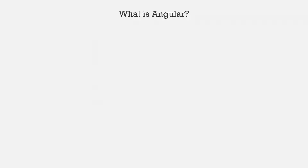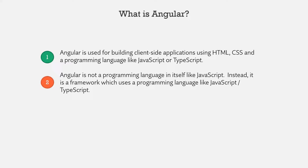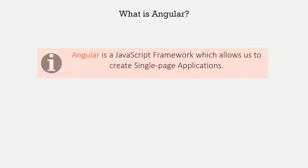So what is Angular? Angular is used for building client applications using HTML, CSS and a programming language like JavaScript or TypeScript. Remember that Angular is not a programming language in itself like JavaScript — instead, it is a framework which uses programming languages like JavaScript or TypeScript. Angular is a JavaScript framework which allows us to create single page applications.